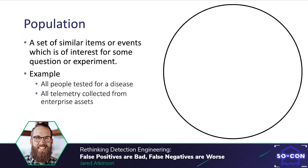The first concept is population, defined as a set of similar items or events which is of interest for some question or experiment. I've represented the population as a circle on the right side of the slide. This can be seen as all the people who have been tested for the disease, or as all telemetry collected from enterprise assets. Next we explore condition positive, which represents the real number of positive events in the collected data.